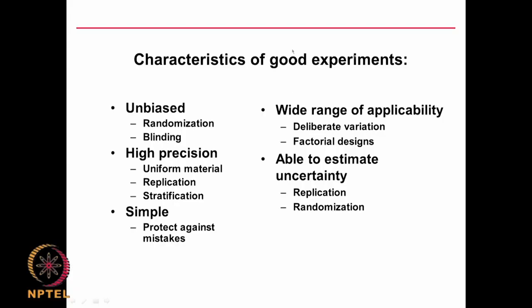Characteristics of a good experiment should be: unbiased and randomized, blind, high precision, uniform material, same raw material, replication, blocking, and simple — so it protects against mistakes and has wide range of applicability. We should be able to estimate uncertainty, that is error, and get confidence limits. We do this by replication and calculating standard error. Randomization is also very important if you want to bring in uncertainty rather than being very specific.